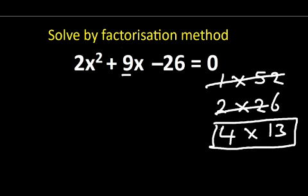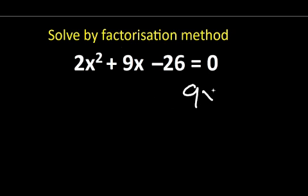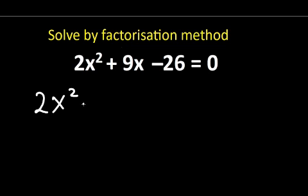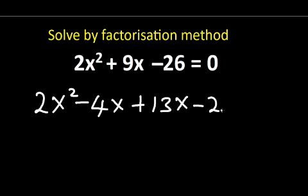Now that we have the factors of 52 that give us 9, we can substitute them in and factorize. So instead of writing 9x in the middle, we are going to write negative 4x plus 13x. What we just did is simply replace 9x with negative 4x plus 13x, and now we can factorize it easily.